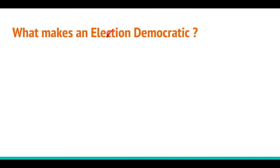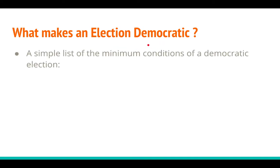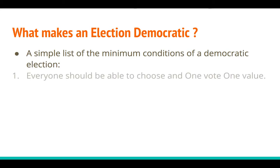We will understand how an election becomes democratic. A simple list of the minimum conditions of a democratic election: everyone should be able to choose, one person one vote, one value.